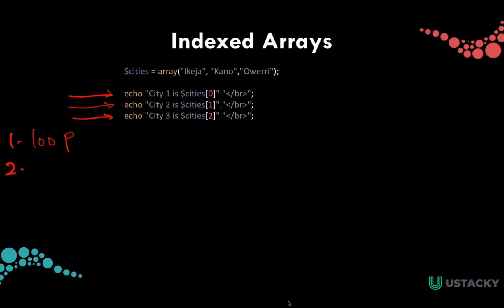We noticed that we have three repetitions and we have three elements in the array. At every point in time, the number of elements in the array will be the number of repetitions we'll be having, and this perfectly follows a for loop. So we know this is a for loop.